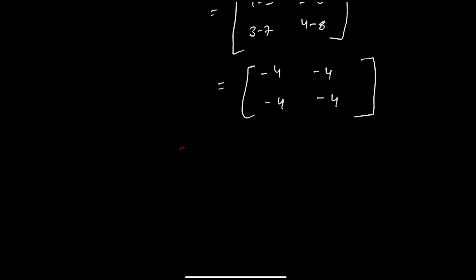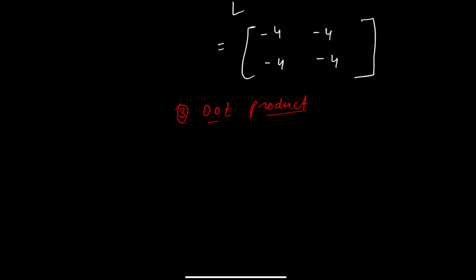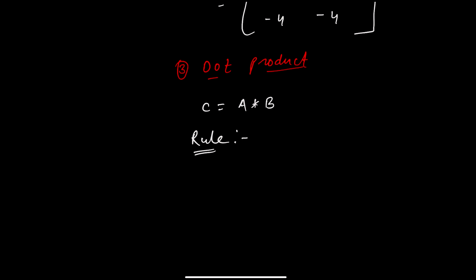Now we have multiplication. We will talk about only the dot product, because that is the most important. To multiply two matrices using the dot product — in Python you use np.dot — there are a few rules to understand. The key rule is that the number of columns in the first matrix A must equal the number of rows in the second matrix B.